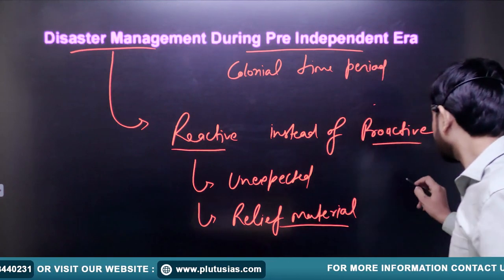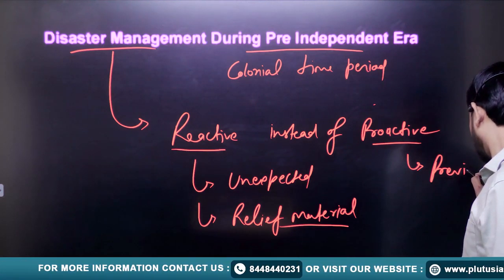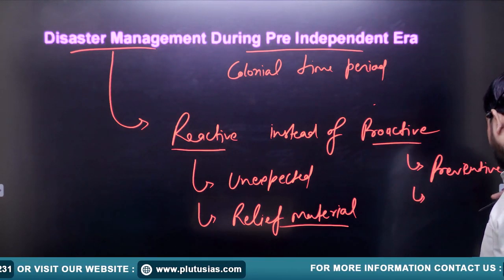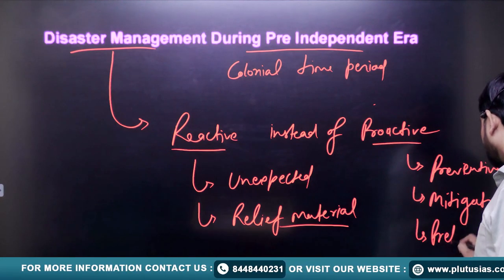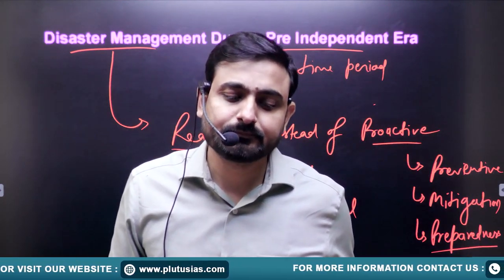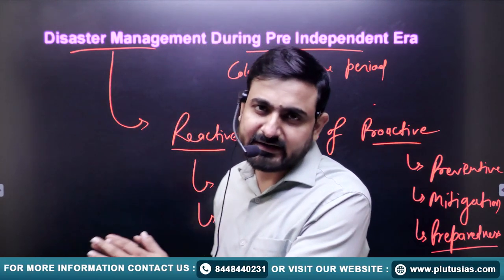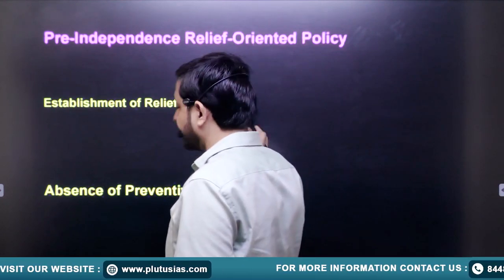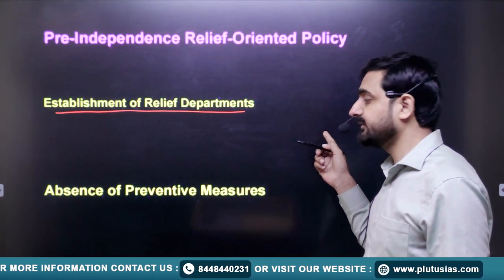There was no step which government used to take for prevention. Government did not take any step for mitigation and preparedness, or for making community capacity strong. Disaster Management during colonial India was primarily based on reactive measures, and government response was primarily limited towards providing relief material. That is why the British government established a relief department.